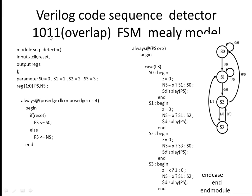Now here is the third state S2. In S2, what you have to detect is 1. So if you get 1, you have to go to the next state, that is S3. Suppose at S2 you get 0 — that means the sequence is wrong, so again you have to go back to S0.